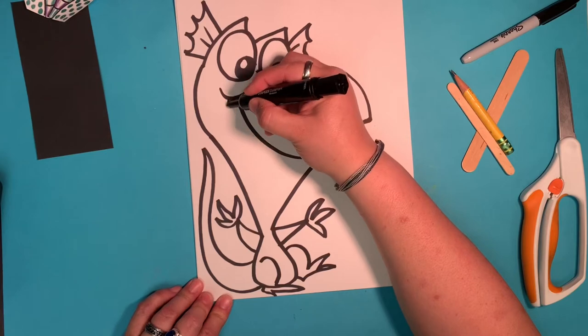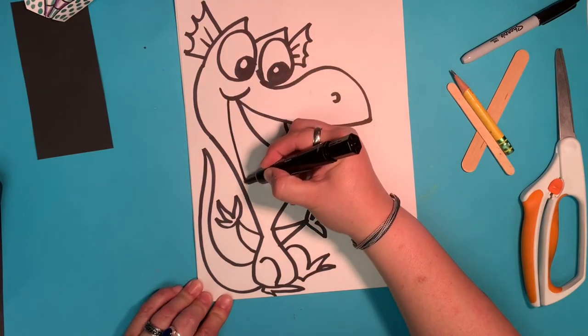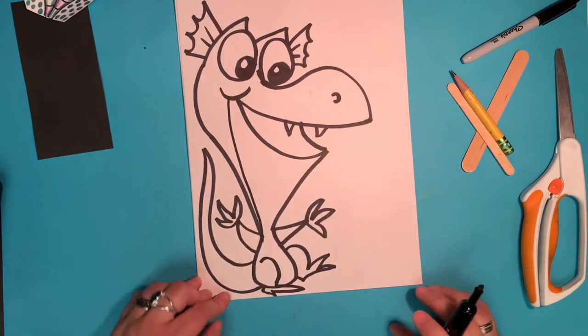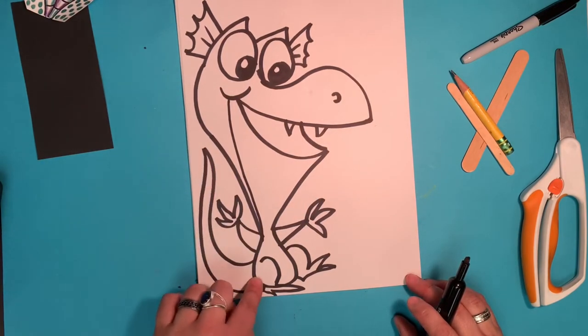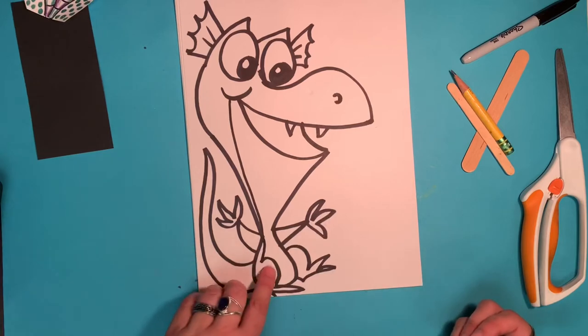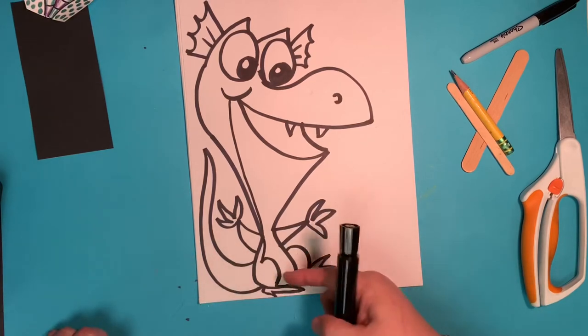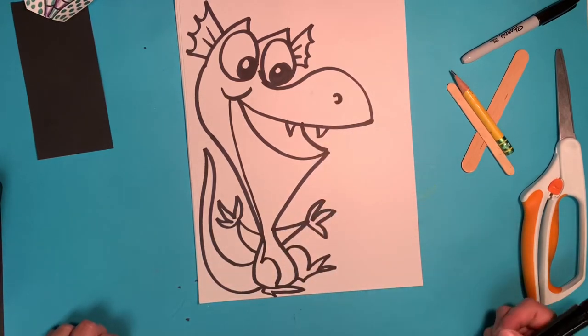And one final thing. We're going to put a line from the side of the mouth down. So this part of his head is green. This part is going to be green. His back and his legs are going to be green. But his tummy and under his chin are going to be white.